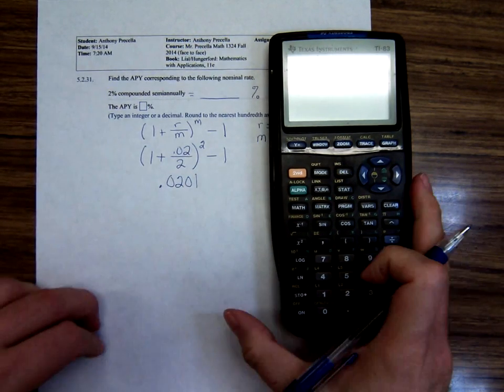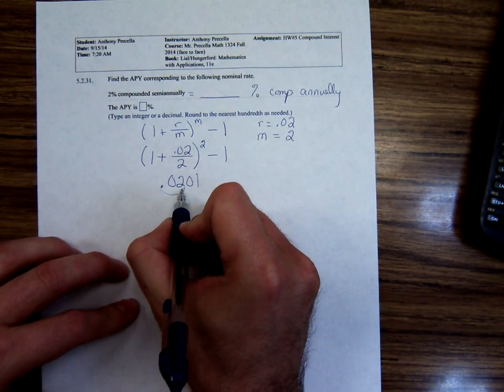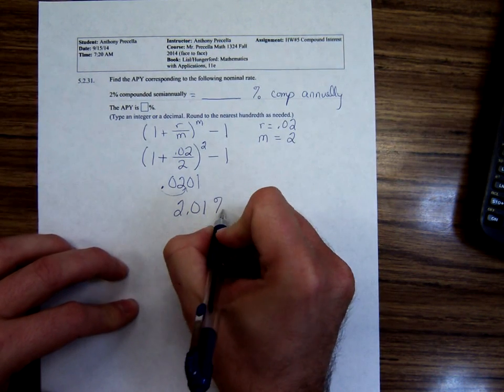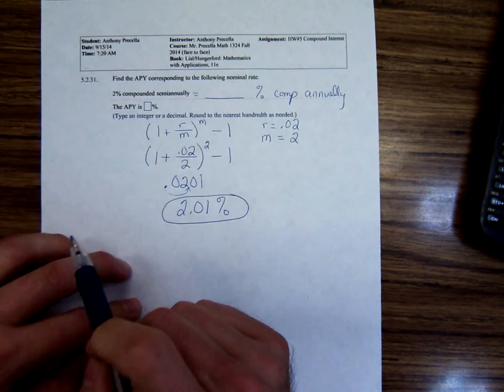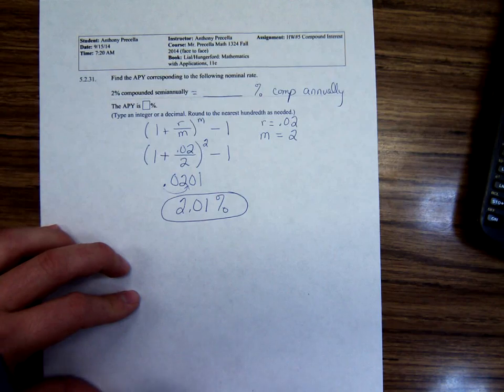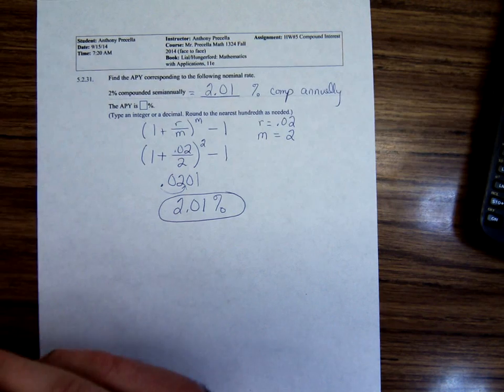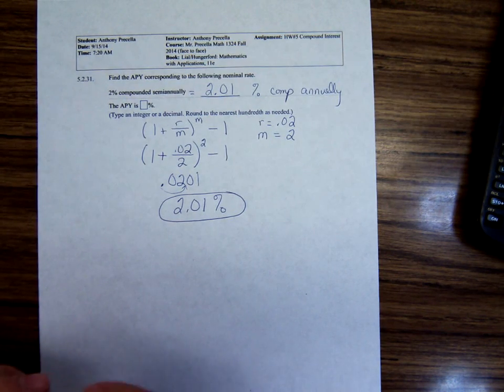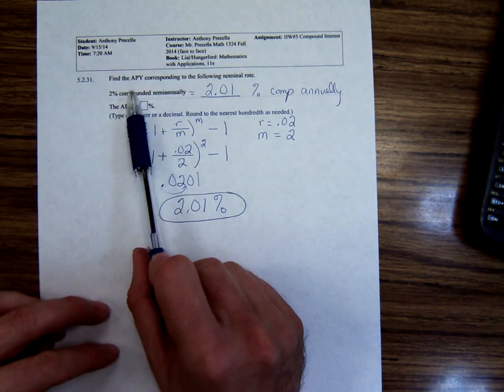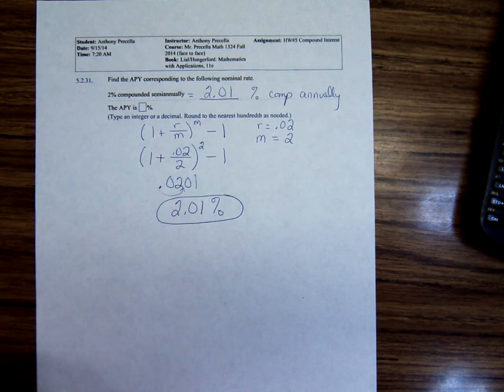So if we're going to write that as a percentage now, move the decimal point two places, 2.01%. So 2% compounded semi-annually would be the same as 2.01% compounded annually. Generally, the more you compound, the more interest you earn. Any questions there?